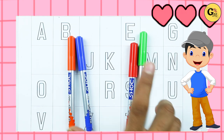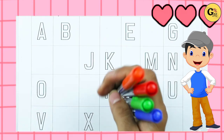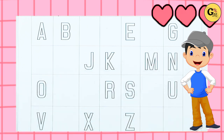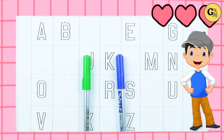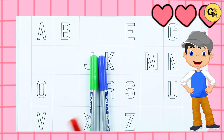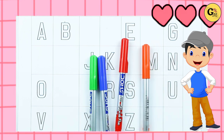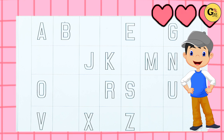Hello friends, today we learn alphabet with filling the blanks. Blue color, green color, red color, orange color. Let's start.